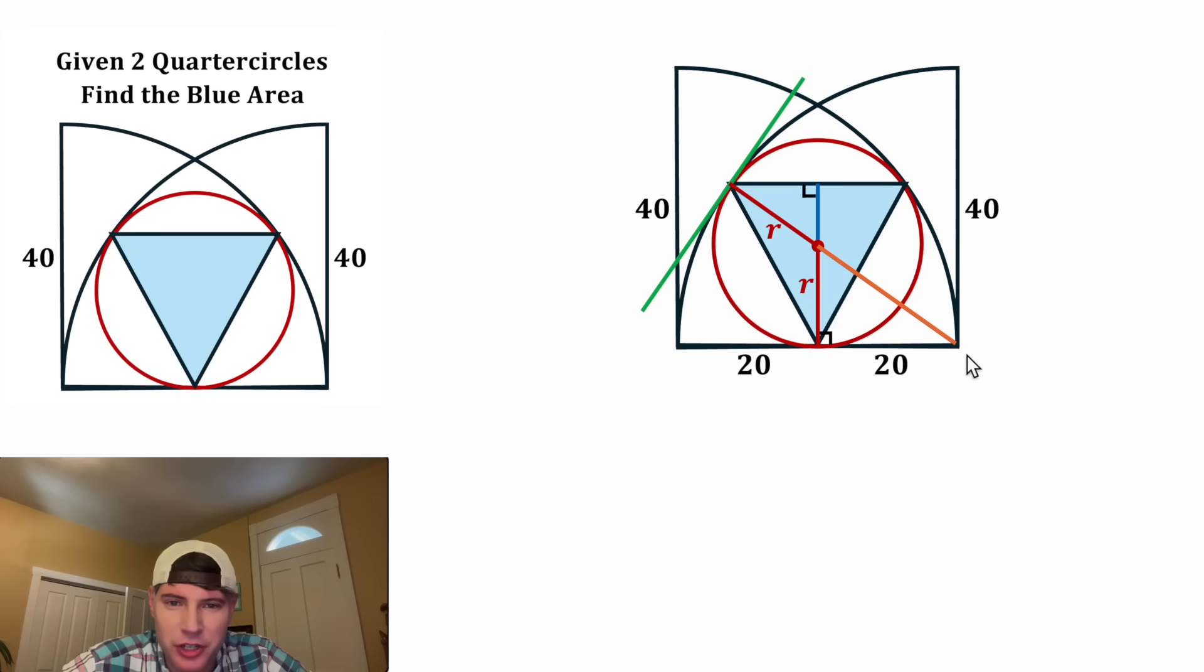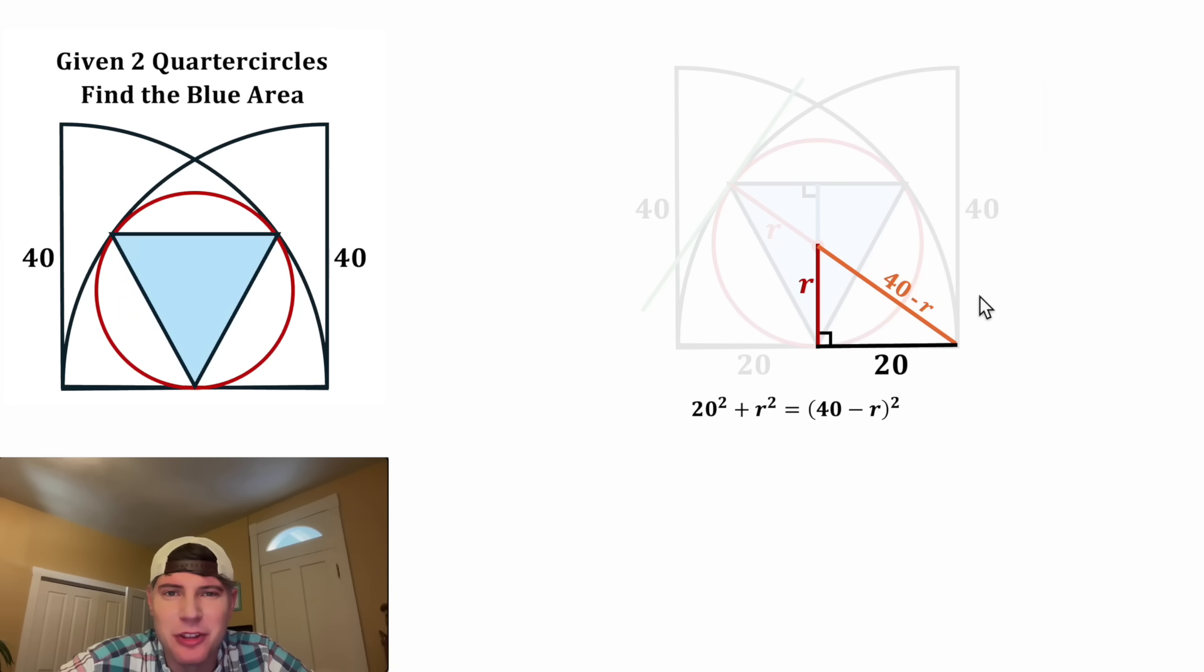Next, let's color this orange. And we do know an expression for this orange distance as well. The entire radius of the quarter circle is equal to 40. This is equal to R. So this remaining orange portion will be 40 minus R because it's the whole 40 minus this R. And now we can focus on this right triangle and we can do the Pythagorean theorem.